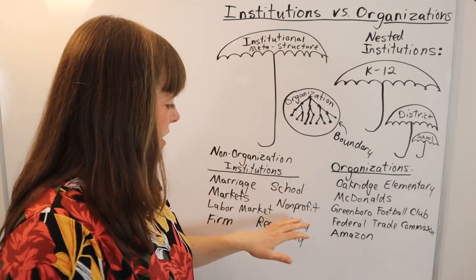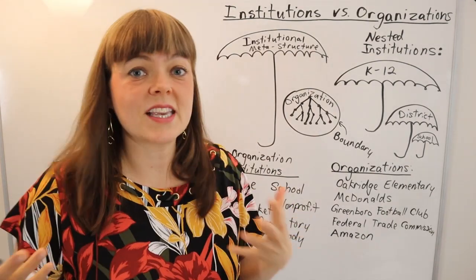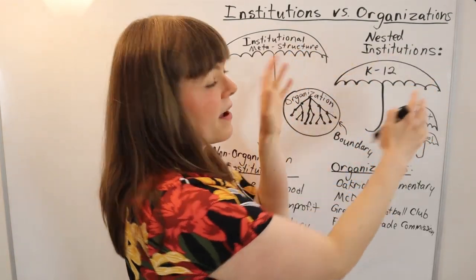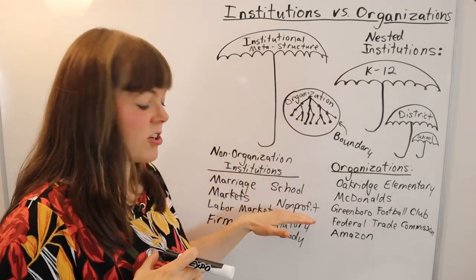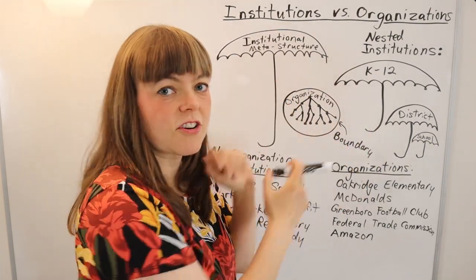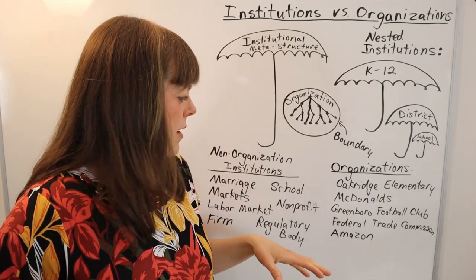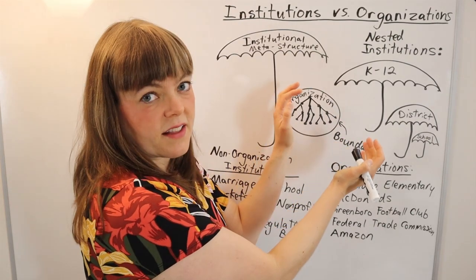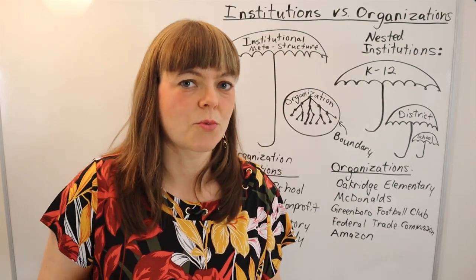These are conceptual institutions. What is a nonprofit? How does that work? There's a legal structure that sets up the guidelines around nonprofits as a meta-institution or meta-structure. Once that meta-structure is set out through law, you can develop specific organizations under it. A regulatory body — we all know what regulatory bodies do — but the Federal Trade Commission has specific working guidelines, a purpose, a hierarchy, and boundaries around what it does.